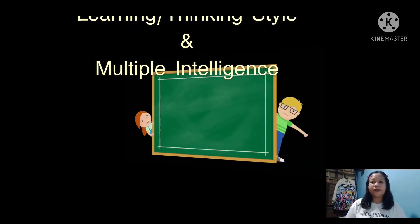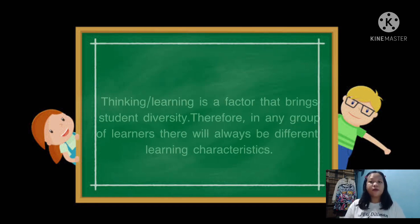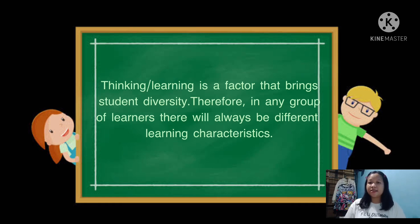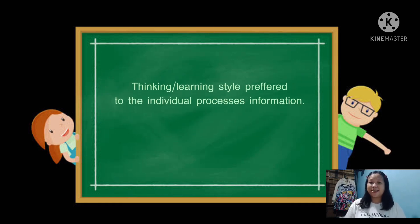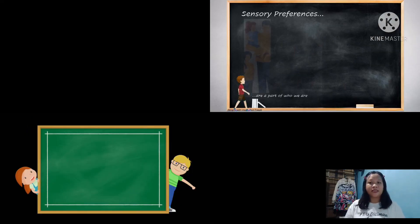Lesson 5: Learning Thinking Styles and Multiple Intelligences. This lesson describes the different learning thinking styles and multiple intelligences. Thinking or learning styles refer to the preferred way an individual processes information, describing a person's typical mode of thinking, remembering, or problem solving. Styles are usually considered to be bipolar dimensions.